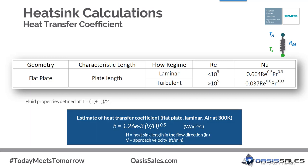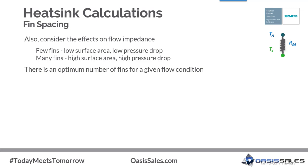Now let's estimate the thermal resistance associated with convection from the heat sink surface. Though heat conduction contributes to overall performance, convective thermal resistance is the dominant factor. For initial sizing, it is reasonable to consider only the fin area and heat transfer coefficient. Typically, the Nusselt number correlation for laminar flow over a flat plate is used to estimate the heat transfer coefficient for a plate fin heat sink. A simplified expression estimates the heat transfer coefficient as a function of velocity and fin length, assuming air, based on the Nusselt and Reynolds number definitions and air properties at 300 K. From the convective thermal resistance 1/hA and the thermal budget, we can estimate the required surface area.